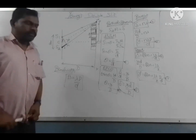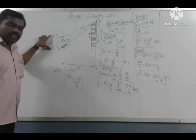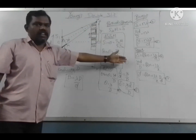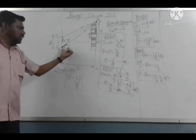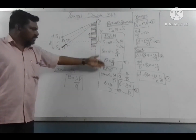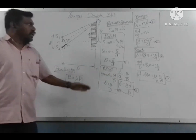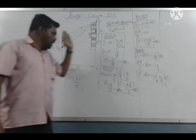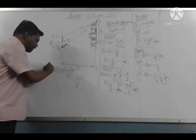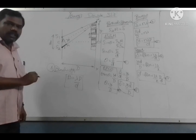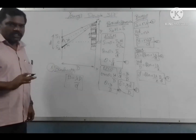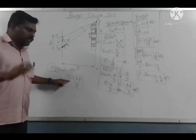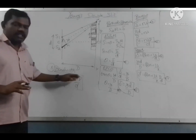We have two coherent sources with separation d, and the screen is at distance D. The condition for bright fringes gives y equals n lambda D over d, and for dark fringes y equals (2n minus 1) lambda D over 2d. The bandwidth equals lambda D over d.